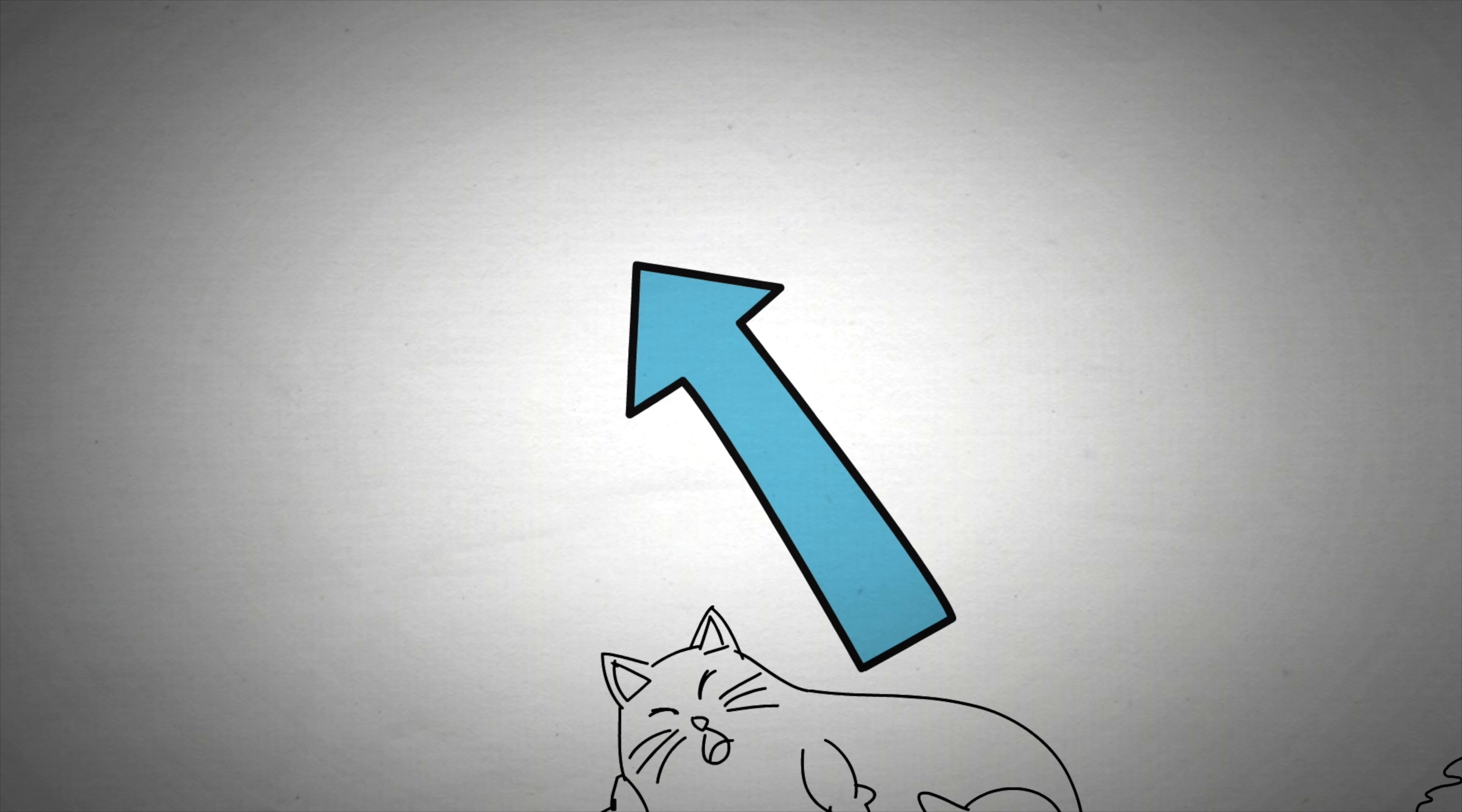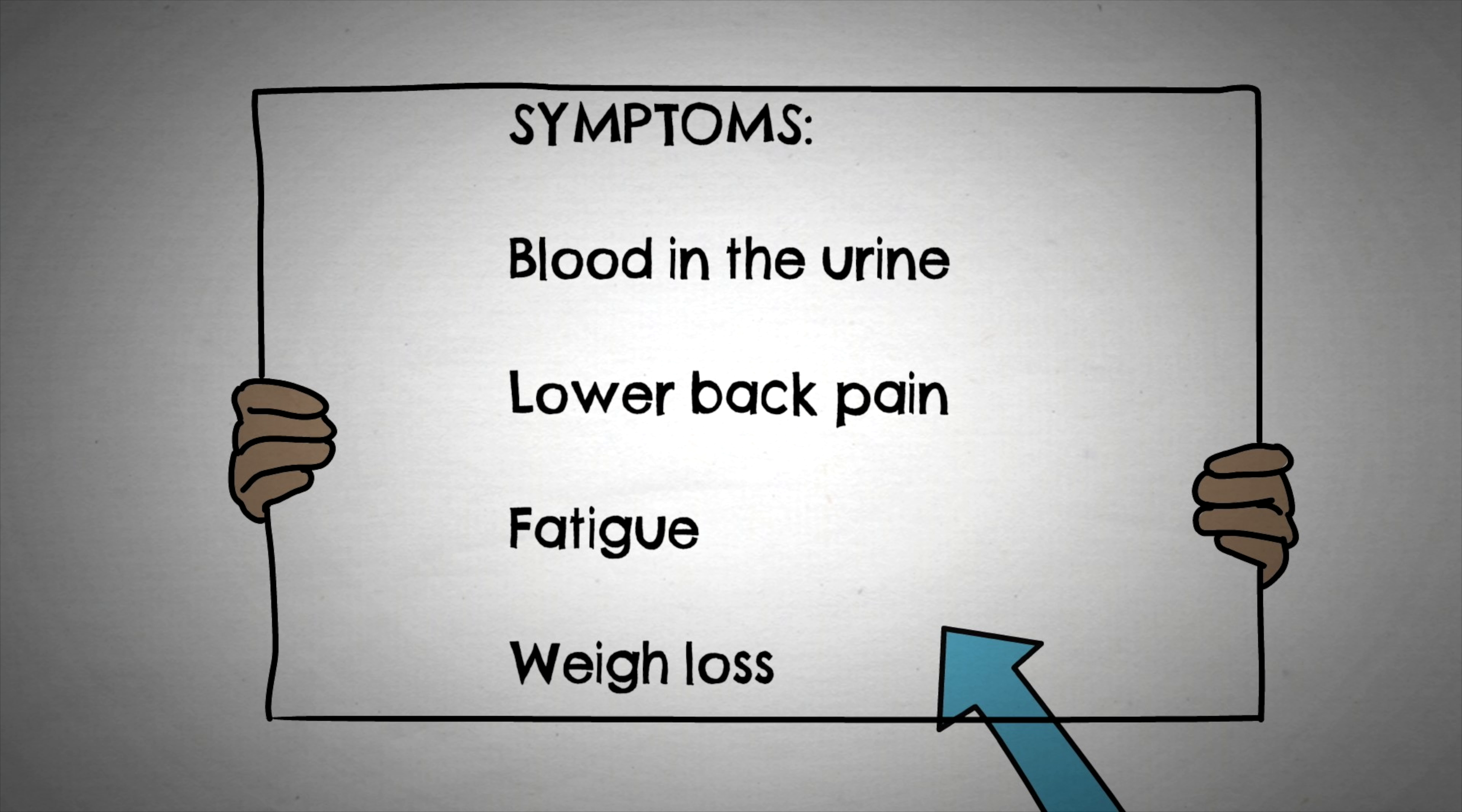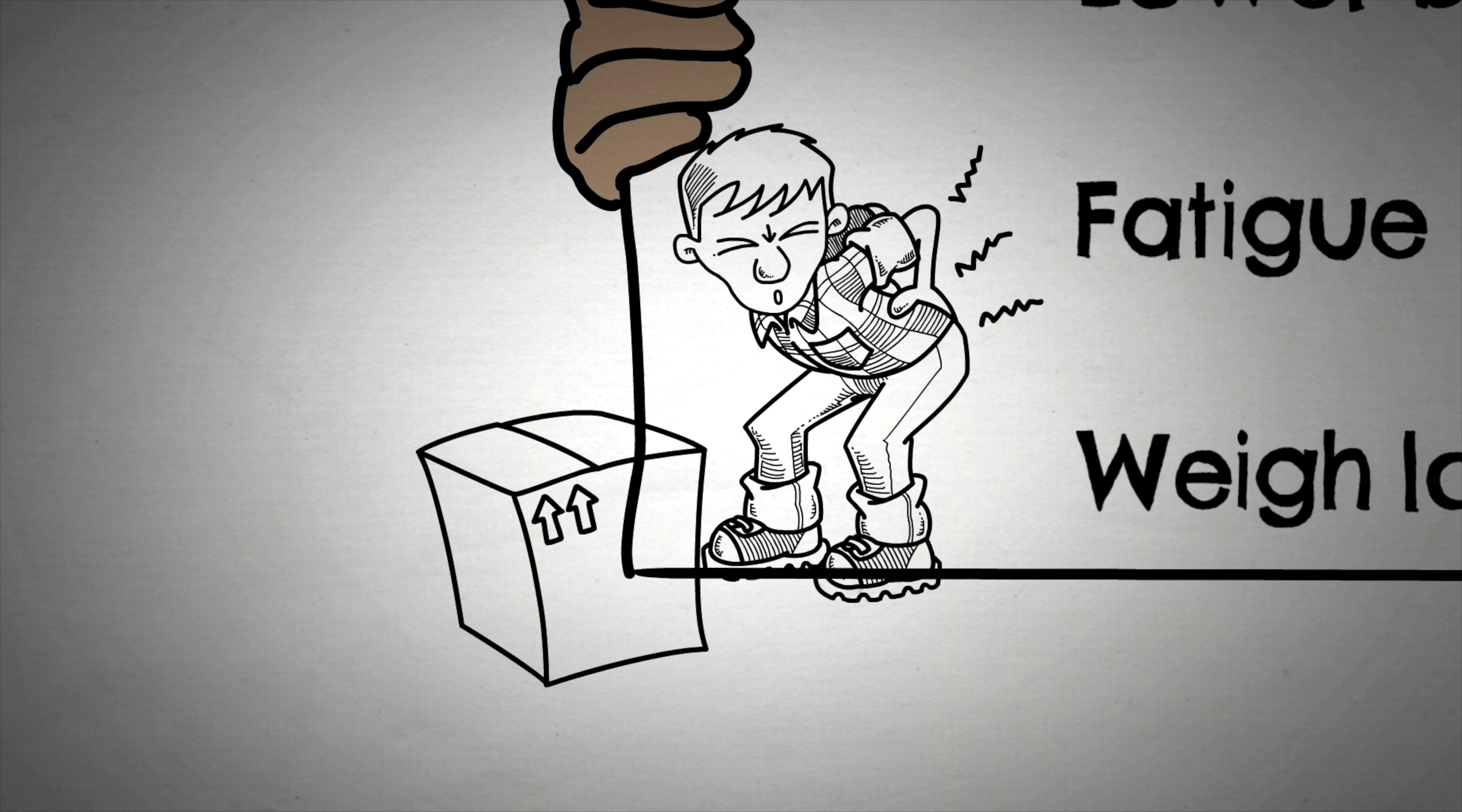However, in some cases, there may not be any noticeable symptoms at all. Overall, if the patient is symptomatic, the symptoms of kidney cancer would be blood in the urine, lower back pain, fatigue, and unexplained weight loss.